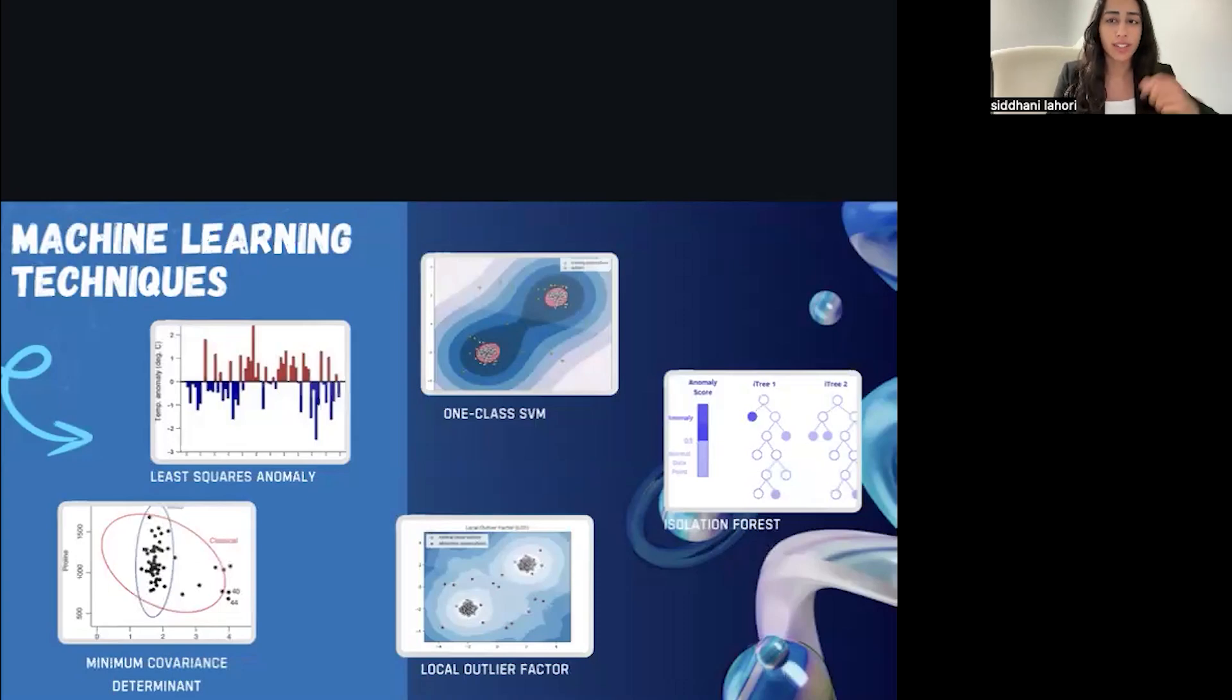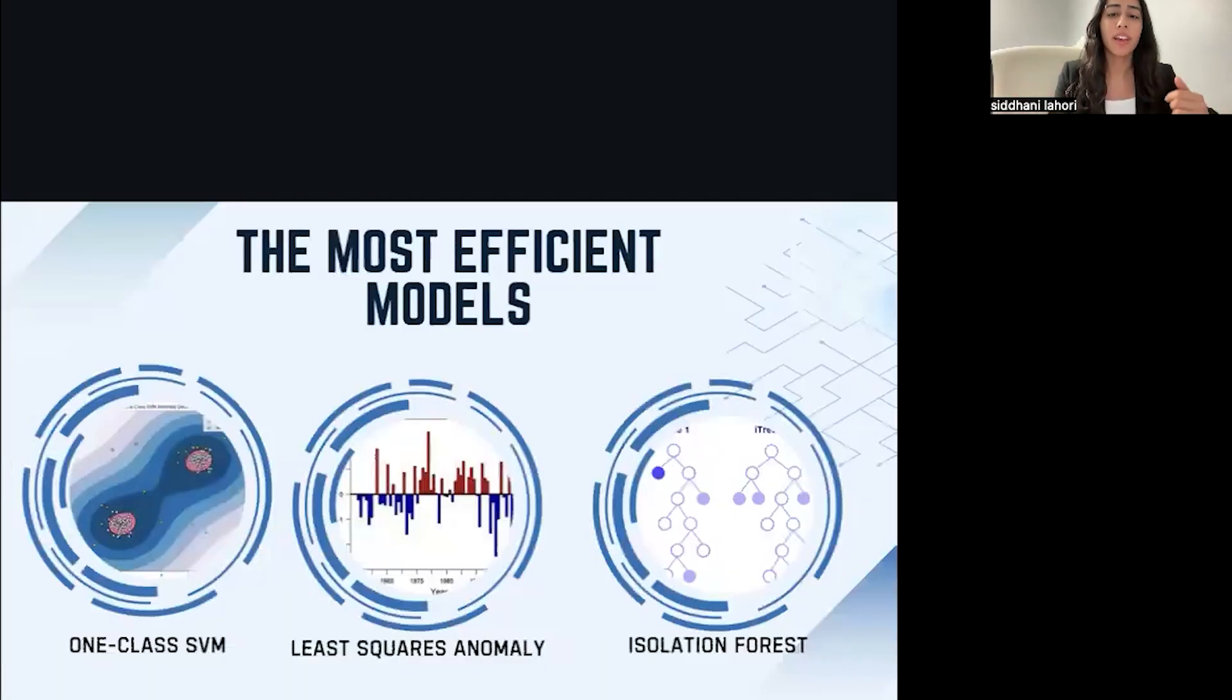And after reviewing the best and worst case scenarios, the three that achieved the most promising results after doing feature selection were One Class SVM, Least Squares Anomaly, and Isolation Forest. This emphasized the significance of these models when implemented correctly, thus showing how important it is to do feature selection on an imbalanced dataset prior to model building.